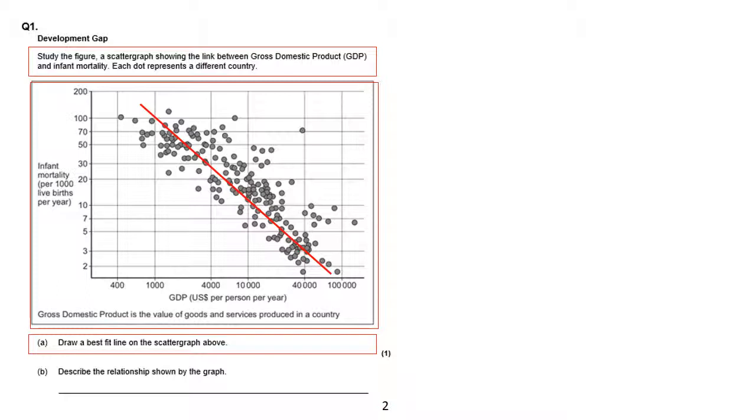Next question, worth two marks. Describe, which means say what you see, the relationship, which means the link between. So describe equals say what you see, relationship equals the link between. It's worth two marks, so one mark is relatively straightforward. As GDP increases,